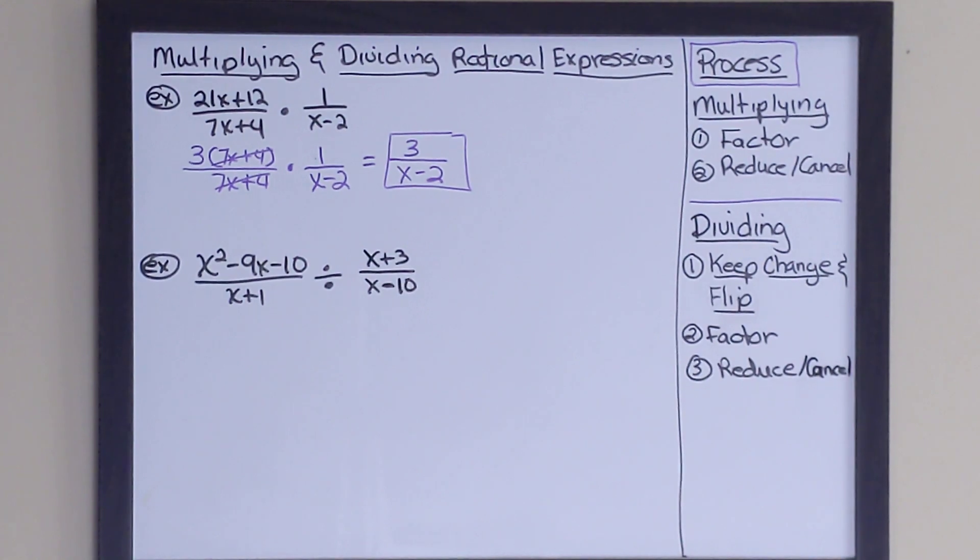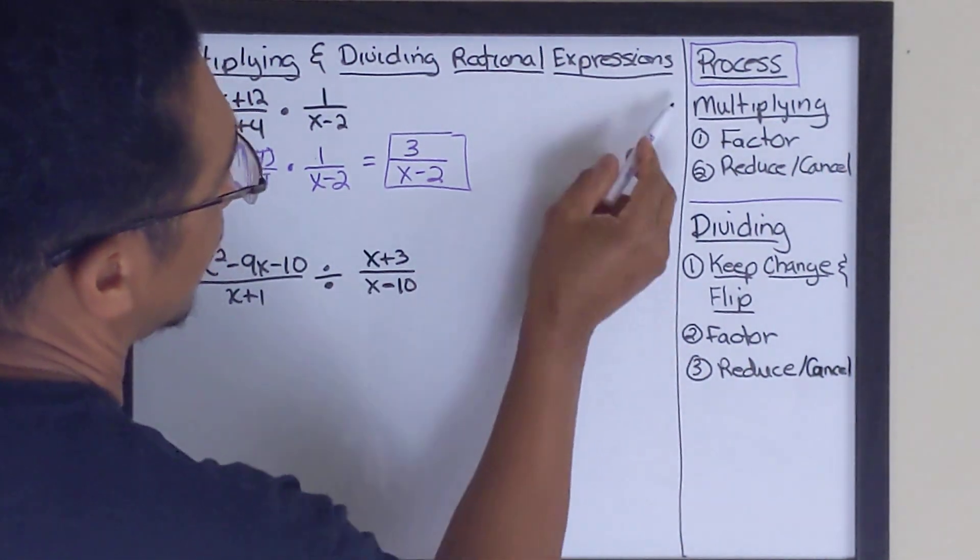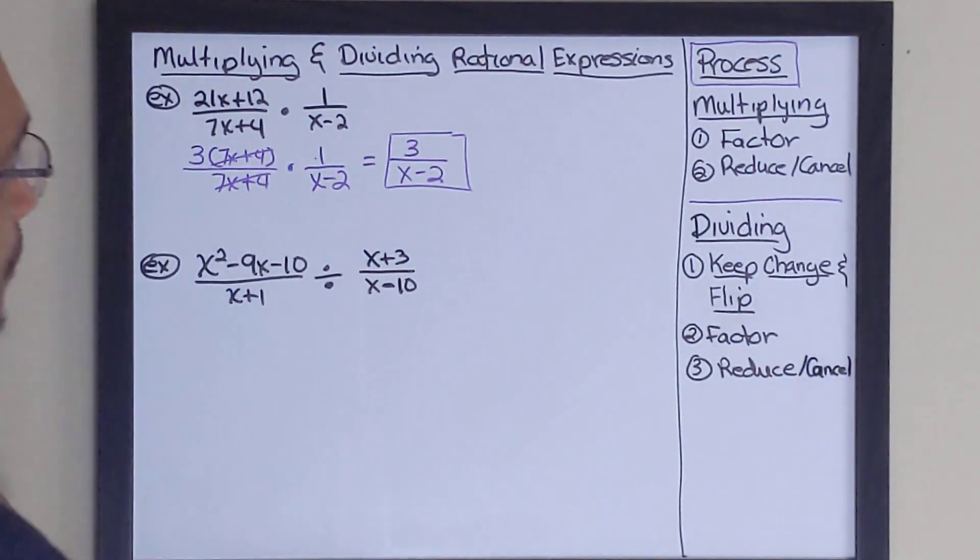Now let's move on to the division example for rational expressions. And like I said in the beginning, when we're dividing, we have one extra step in front of all of these, which is to keep change and flip. That's the method that we use at our school.